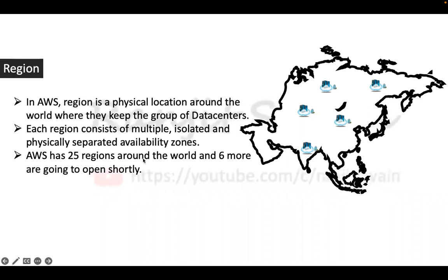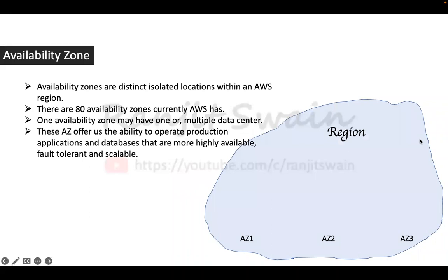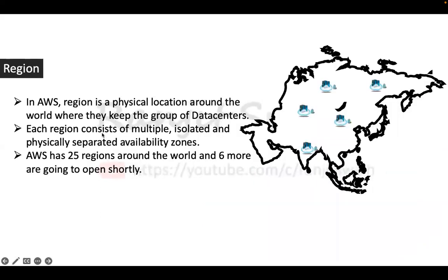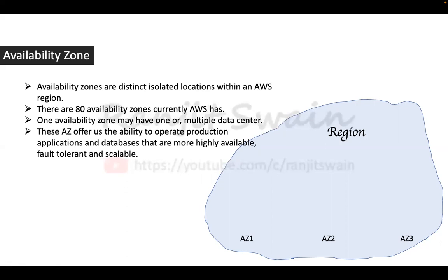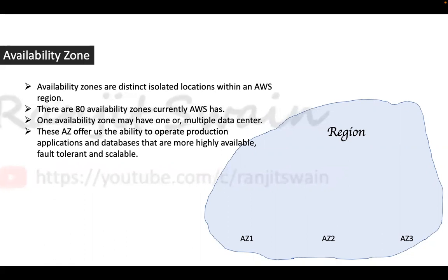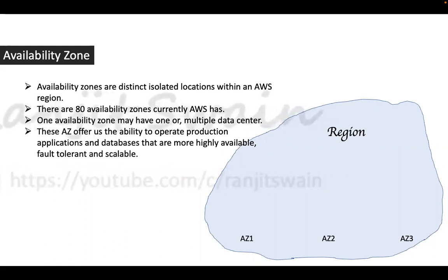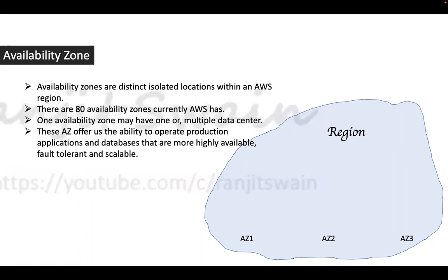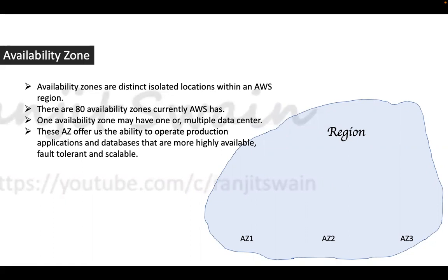AWS has 25 regions around the world. What is an availability zone? Each region consists of one or multiple availability zones. Availability zones are distinct, isolated locations within an AWS region. There are currently 80 availability zones. One availability zone may have one or multiple data centers. One region can have one or multiple availability zones, and one availability zone can have one or multiple data centers.